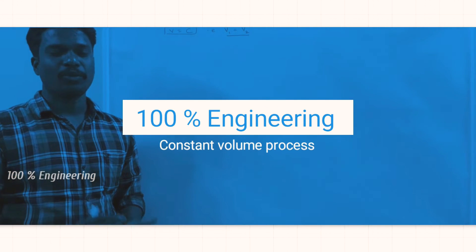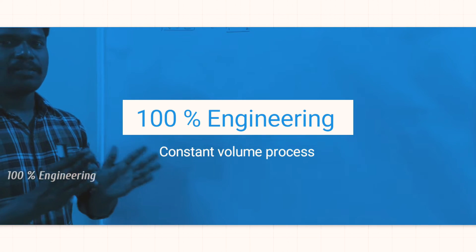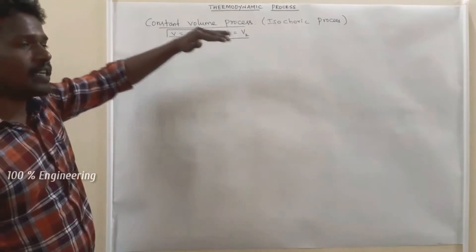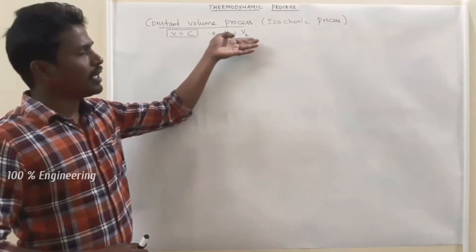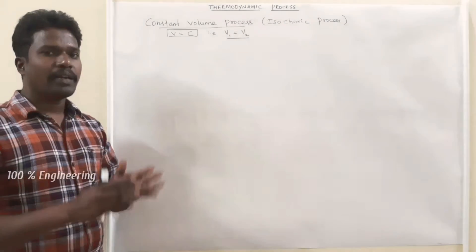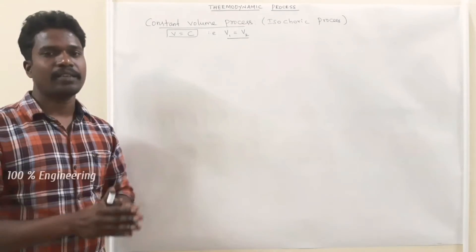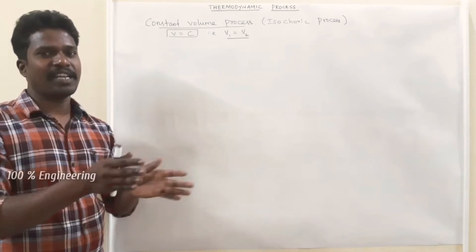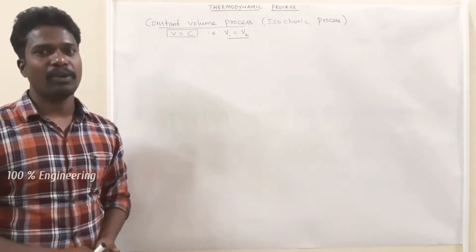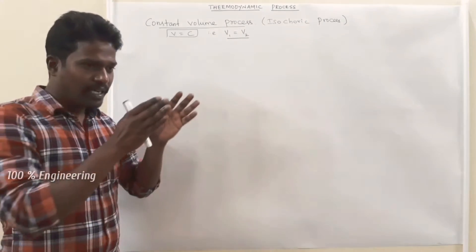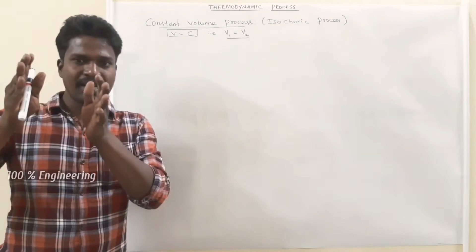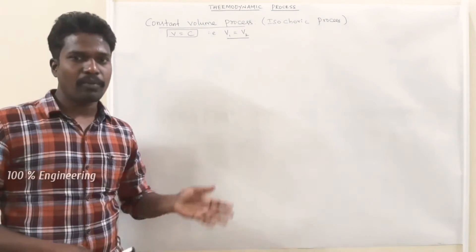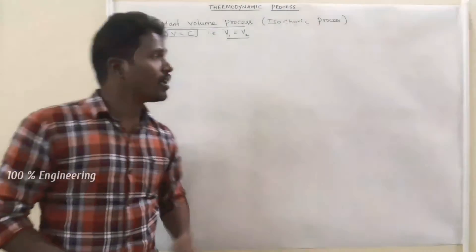Welcome to 100% Engineering. In this video, we will discuss the constant volume process. In a constant volume process, volume is said to be constant, that is V1 equal to V2. We consider a thermodynamic process which takes place between two states, from state 1 to state 2. The volume at the initial state and the volume at the final state are both equal. There is no change in volume. Such a process is called a constant volume process, and another name for it is the isochoric process.